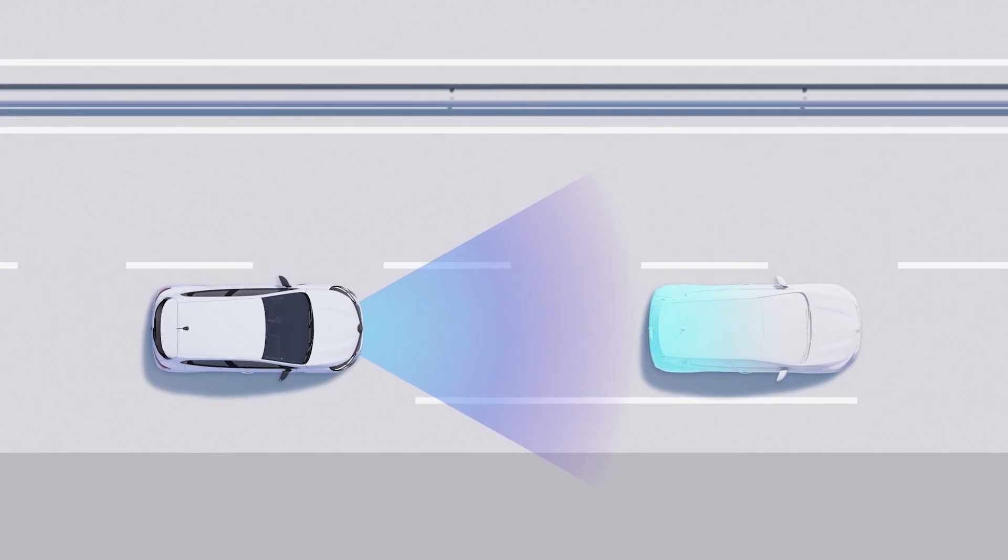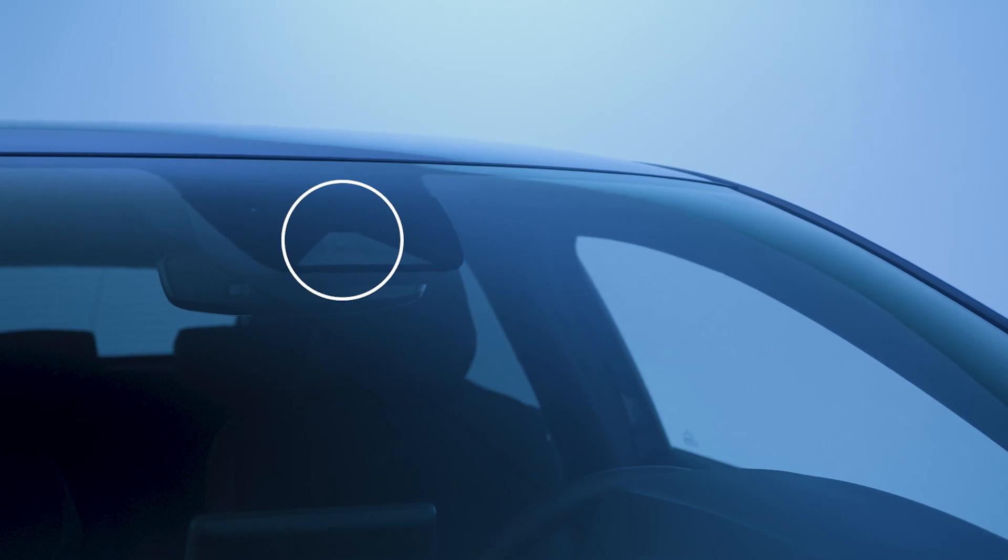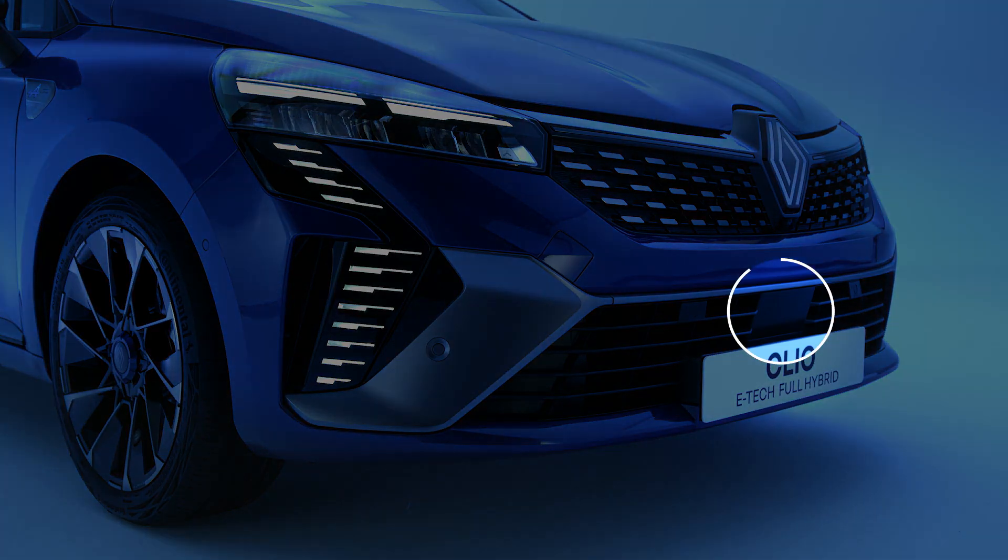Active emergency braking determines the distance between you and the vehicle in front using information gathered by the camera on the windscreen and the radar in the front bumper.